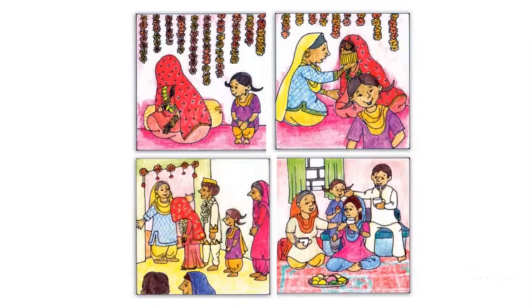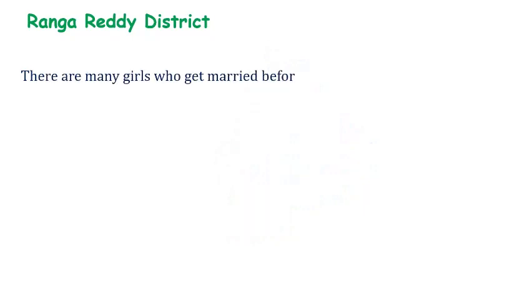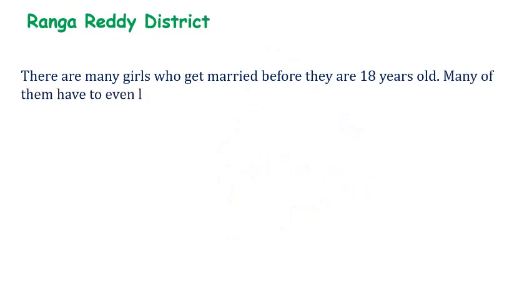Now we will read the story of Ranga Reddy district, which is in Telangana state. There are many girls who get married before they are 18 years old, and many of them have to even leave school.